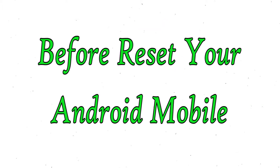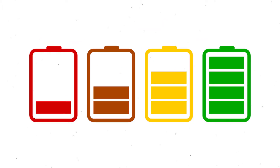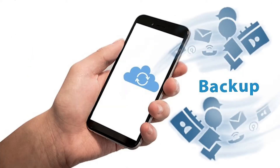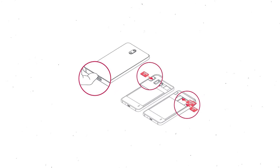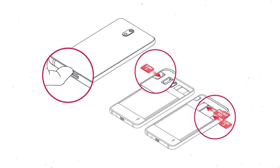Before resetting your mobile, make sure the battery is properly charged. If it is less than 50%, charge your mobile first. You need to make sure that the data on your device is backed up so you do not lose valuable photos or documents. Reset deletes all your mobile data, so you should back up all important data and remove your SIM and SD card.